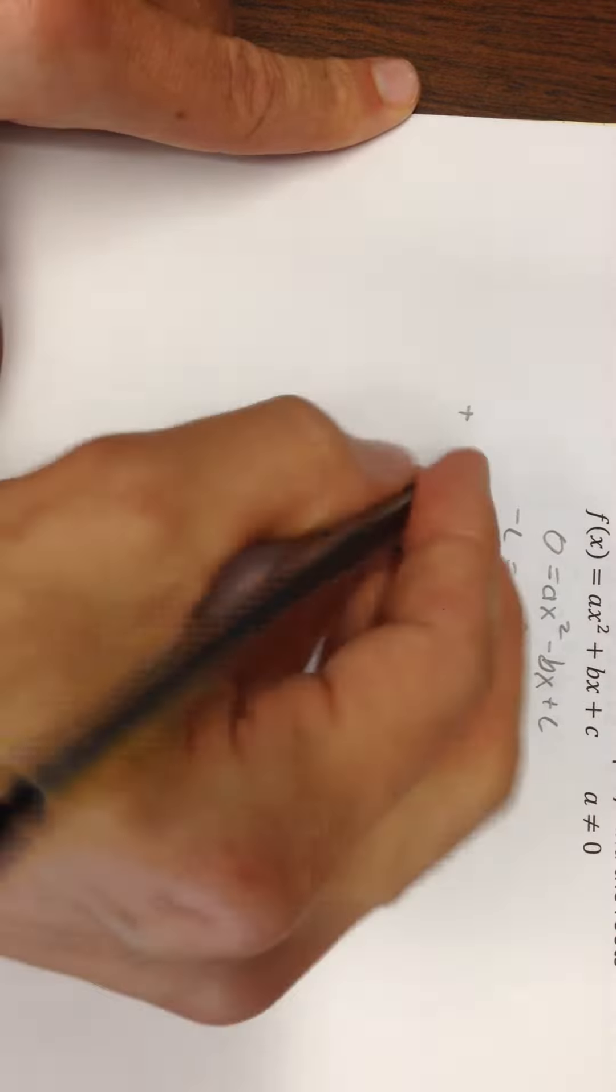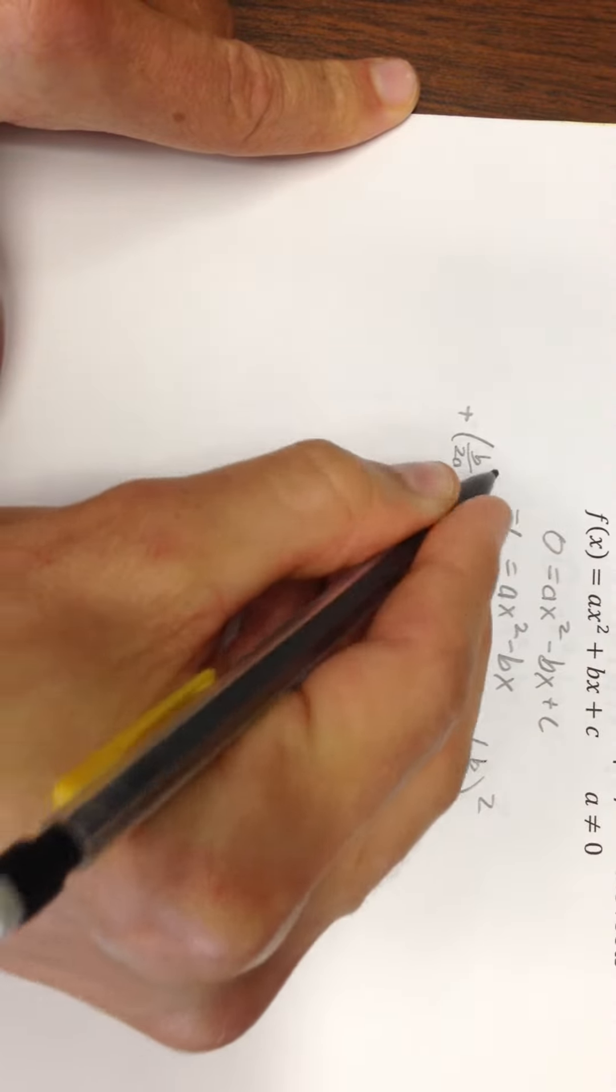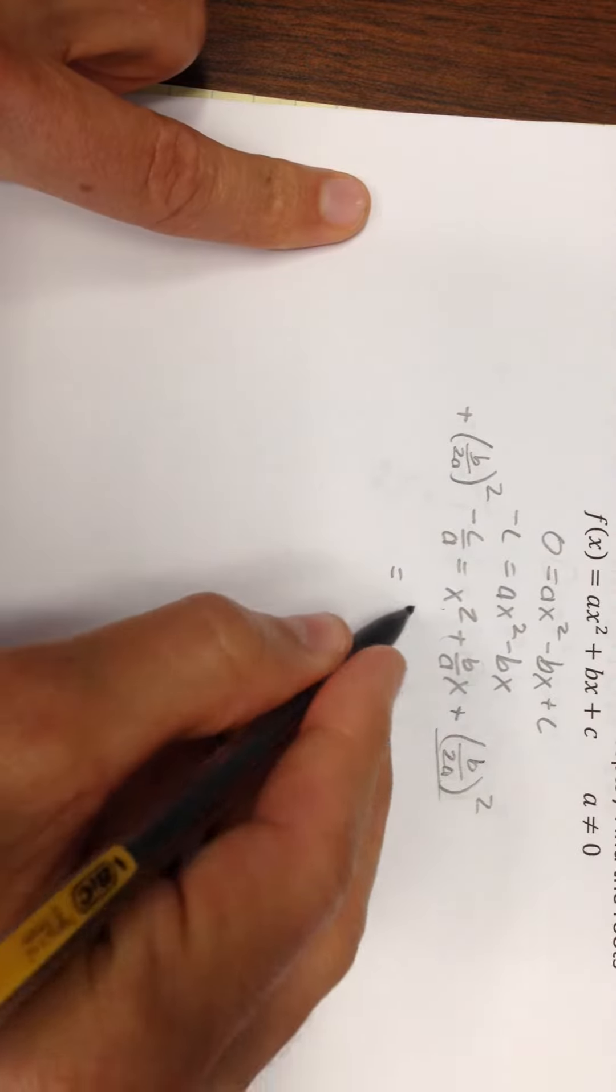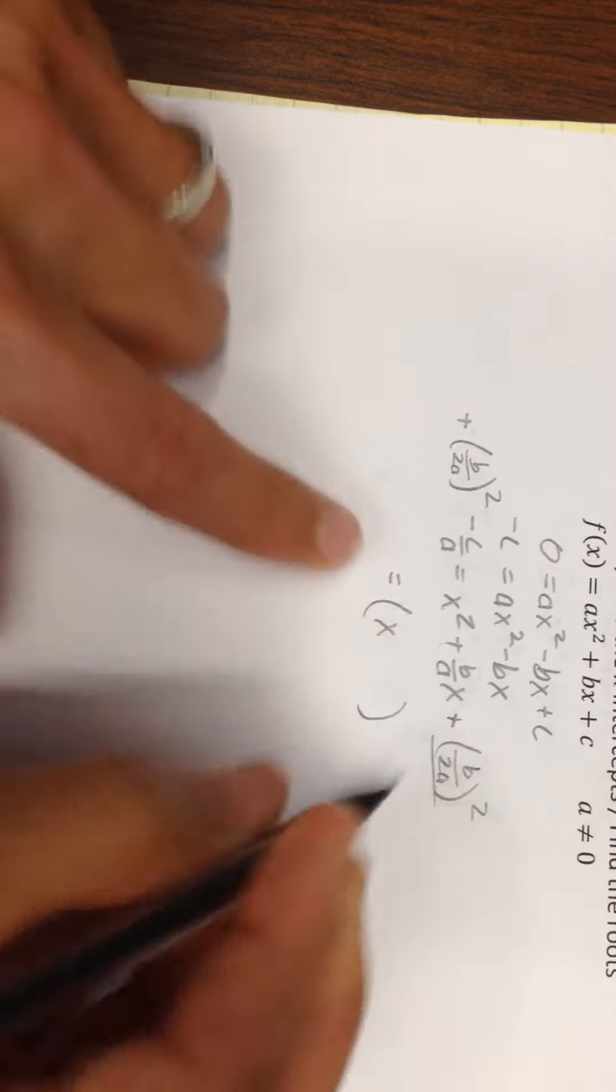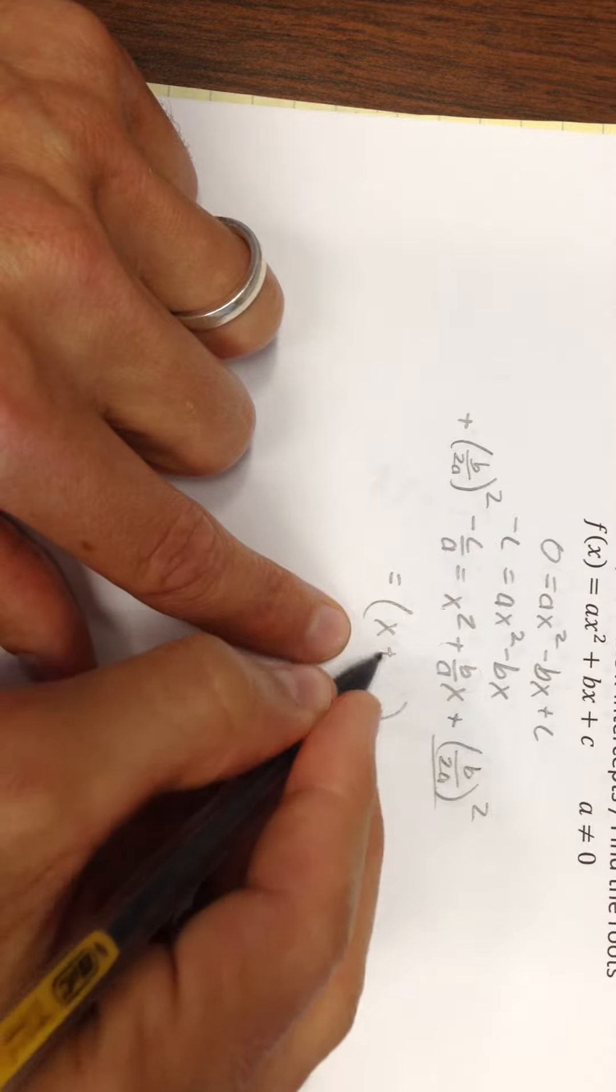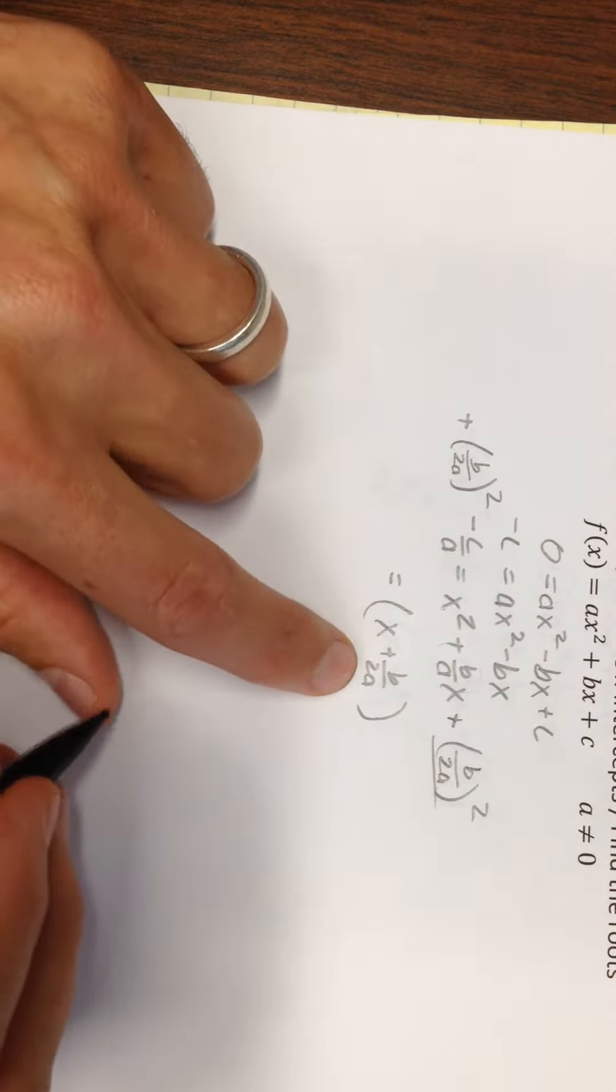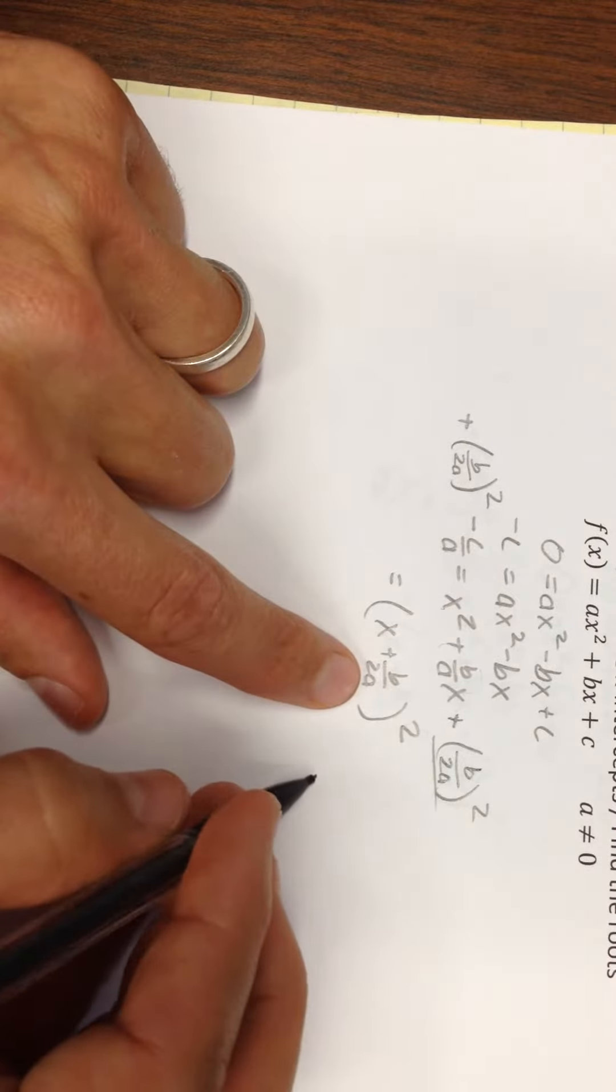Take some time to think about that if you need to. b over 2a squared. Now the whole point of that is so that I can factor this side as (x + b/2a) times (x + b/2a), or (x + b/2a)².